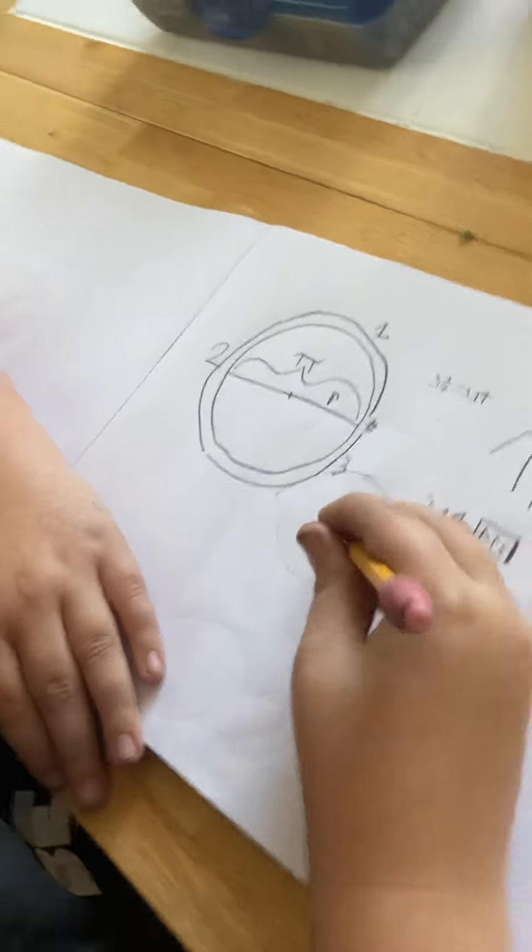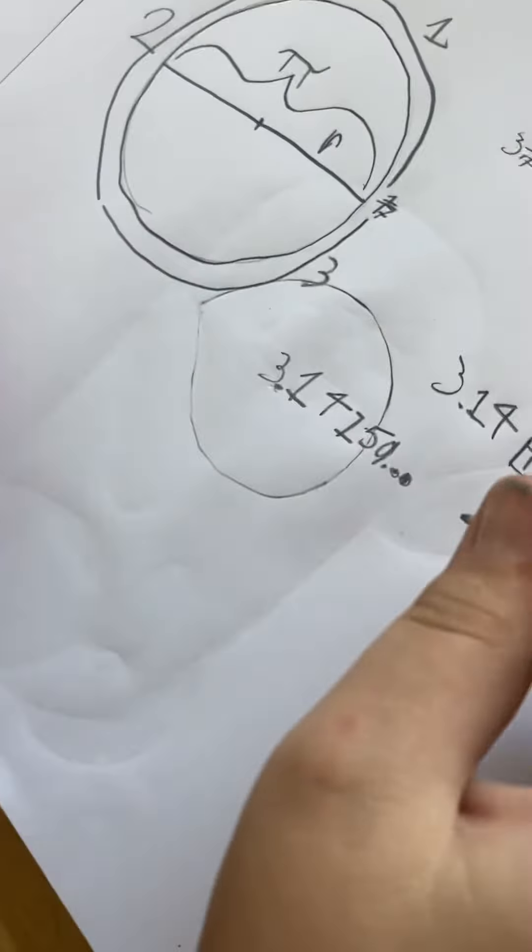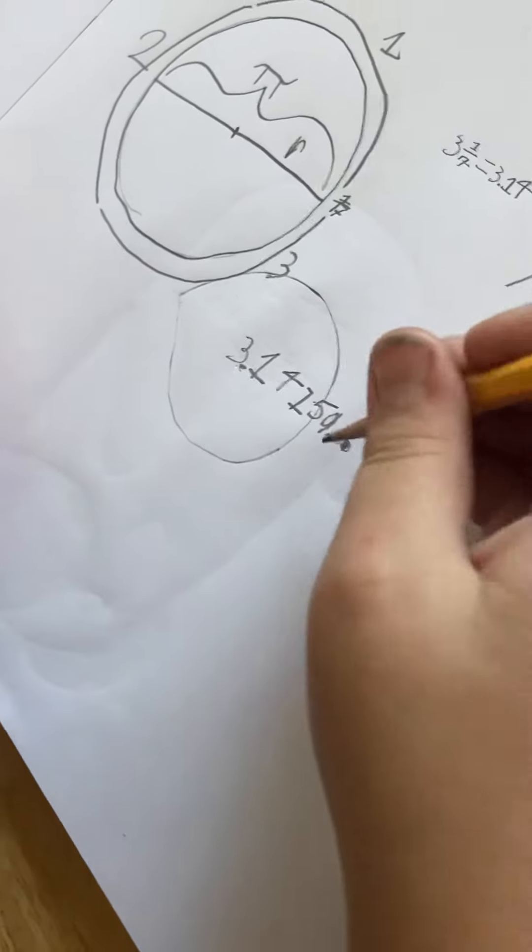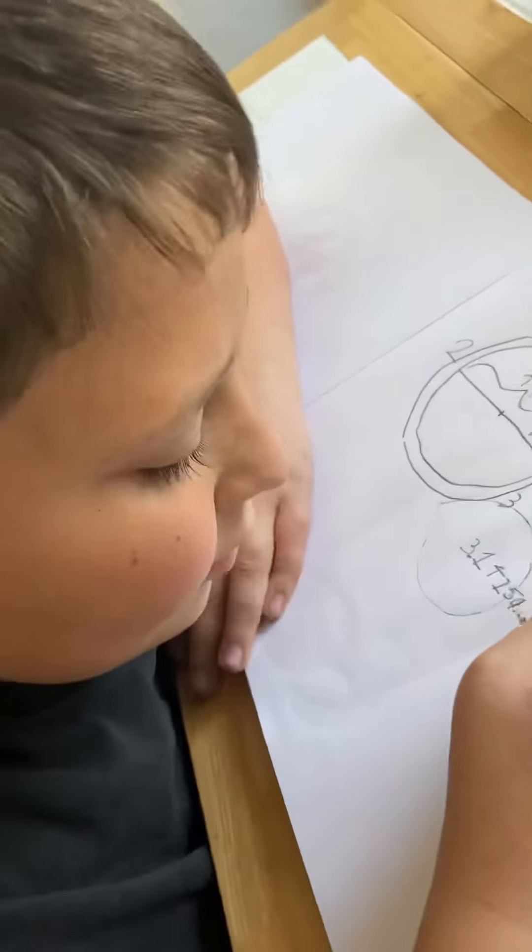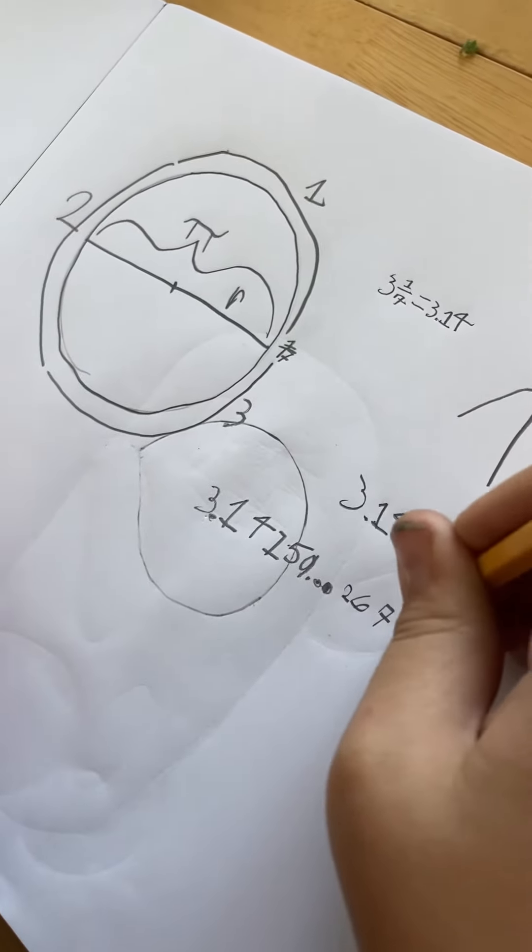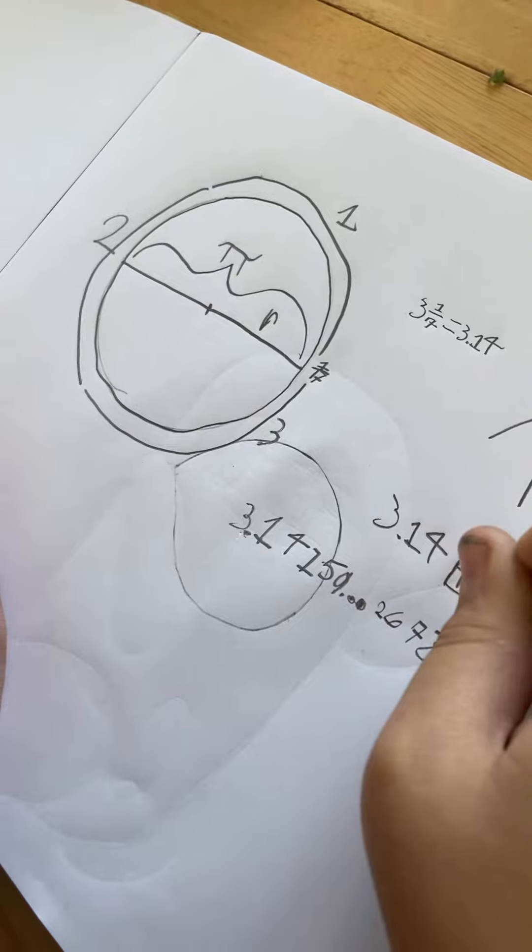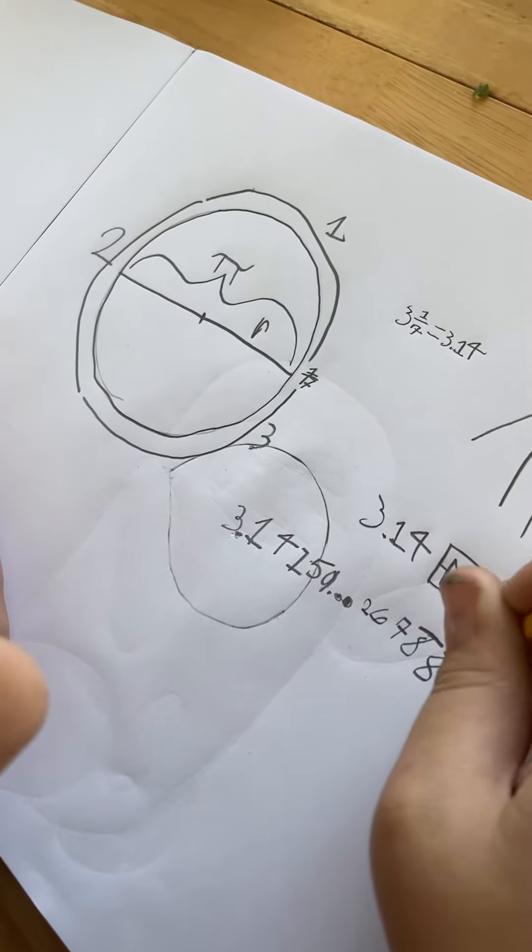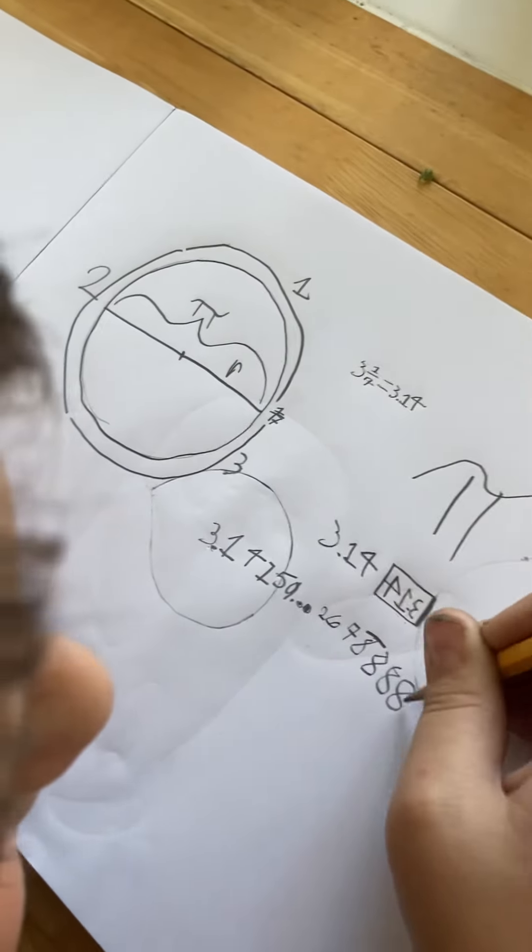After these numbers, it goes on forever. Like, there are many theories. Like, it could be 2, 6, 7, and then 8 with a line above it. And that means it goes on.